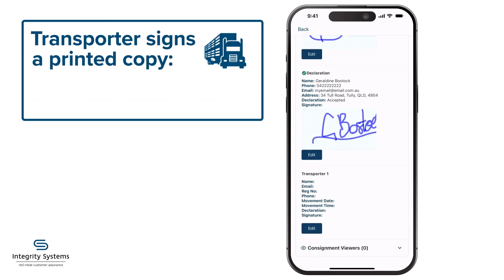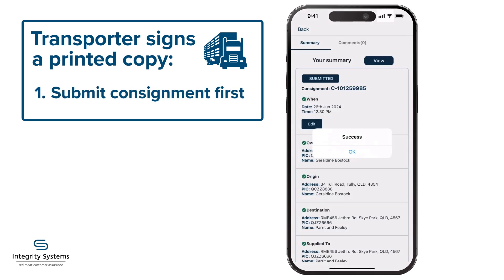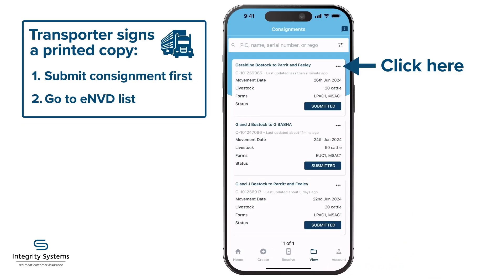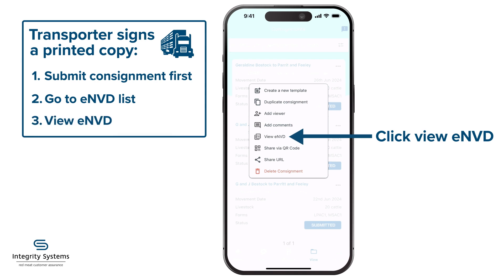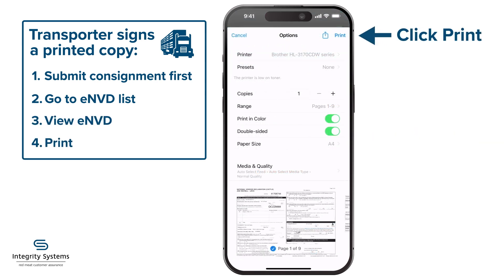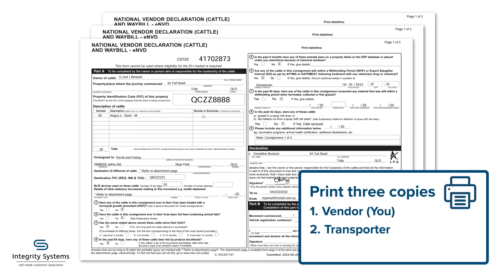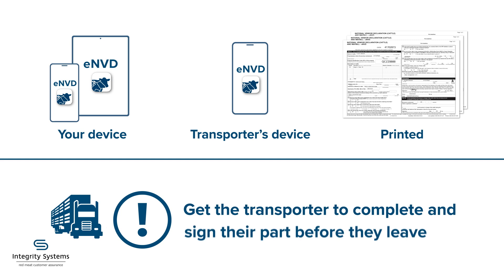To have them sign a printed copy, you'll first need to submit the ENVD, or it'll print as a draft. View your list of ENVDs and click the three dots on the one you're working with, select View ENVD, and choose the print function from your device. Make sure there are three copies: one for you, the transporter, and the destination. However you do it, get the transporter to complete and sign their part before they leave.